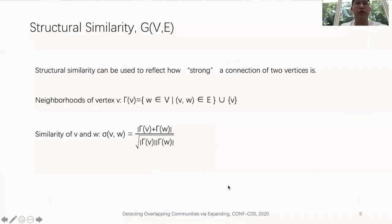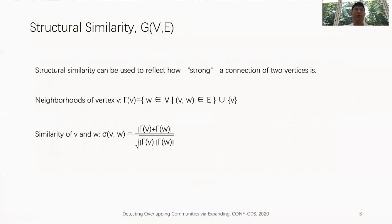The structural similarity of two vertices is defined, and we consider it can be used to reflect how strong a connection between two vertices is. The vertex structure of vertex V is the union of V and its neighborhoods. Structural similarity of vertex V and vertex W can exactly reflect how similar they are — with higher similarity, the connection is stronger. The similarity of V and W is a value between 0 and 1.